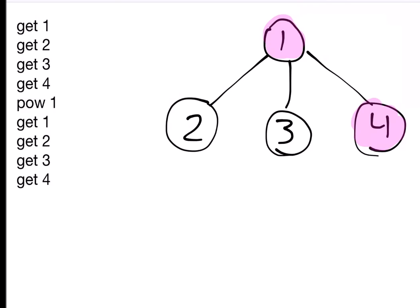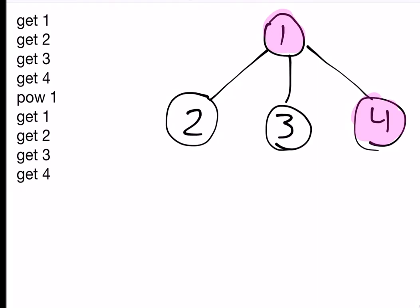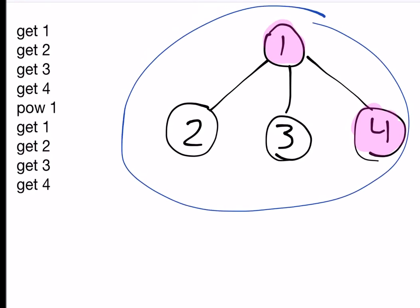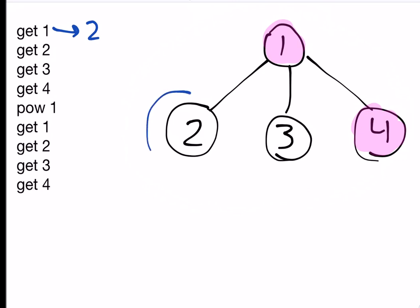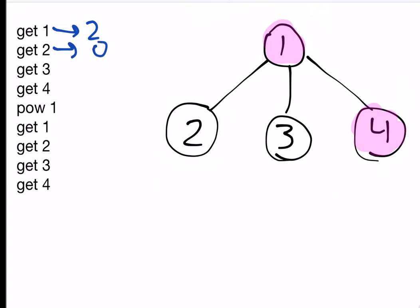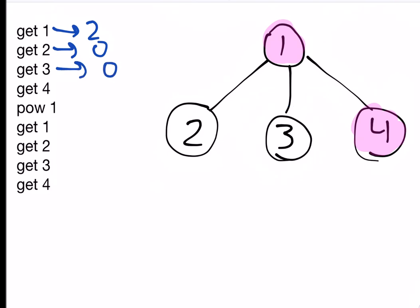Let's consider the sample input. For the first query, GET 1, we have to figure out how many nodes in the subtree of 1 are currently lit — that is this whole entire tree here. We can count that nodes 1 and 4 are lit and none of the rest are, so the answer is 2. For GET 2, we're counting the lit nodes in that subtree — they are 0. For GET 3, also 0. For GET 4, we're counting the lit nodes in that subtree, which is 1.